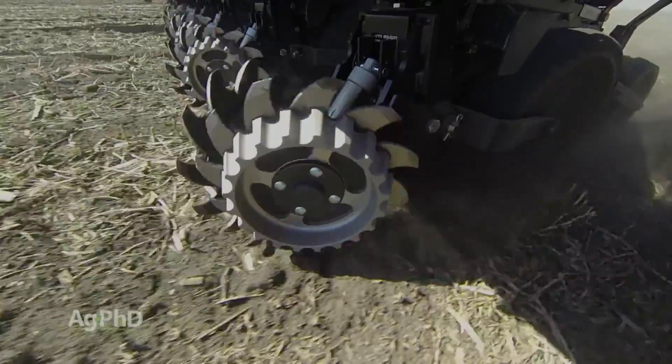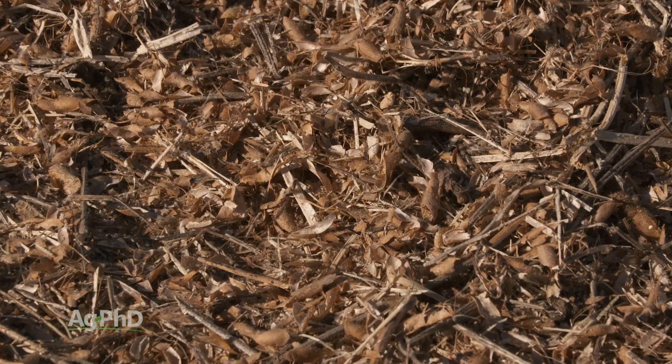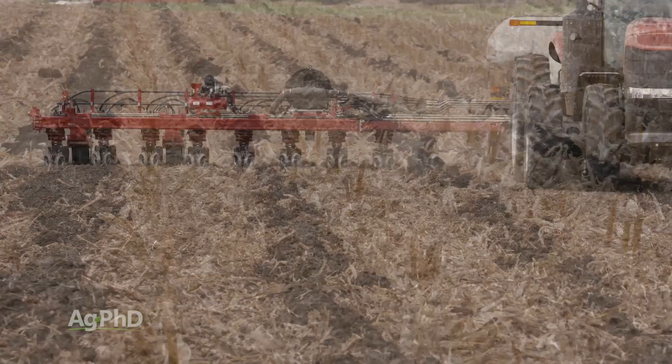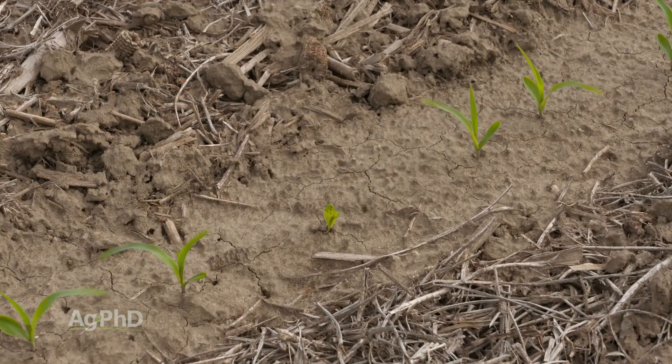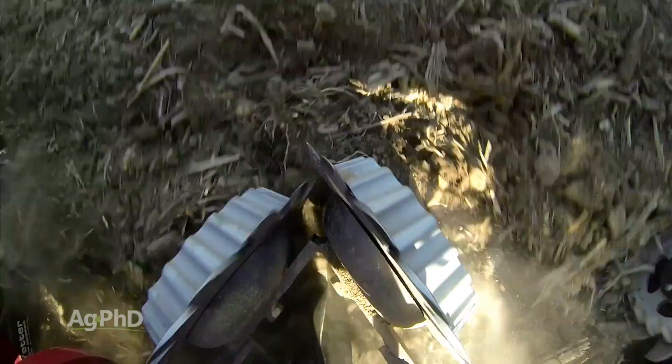If you're going into soybean stubble there's no problem — it'll have barely any residue at all, you can slice right through it. But if you're going through corn stalks, even if you've done some tillage, you're going to have big chunks of stalk and root balls. It's not going to be perfect, and if you don't have perfect seed placement you're going to have uneven emergence and your yield will suffer. Make sure your planter is set up to clear that residue out of the way, maintain a nice even seedbed, and keep gauge wheels running smooth for consistent depth and seed placement.